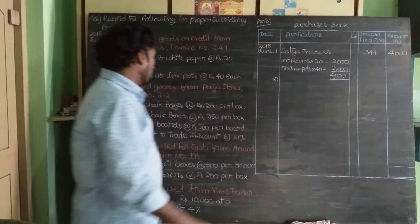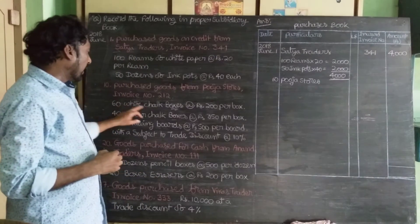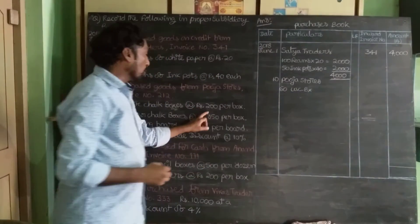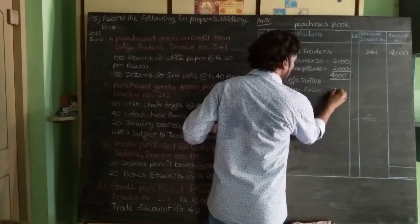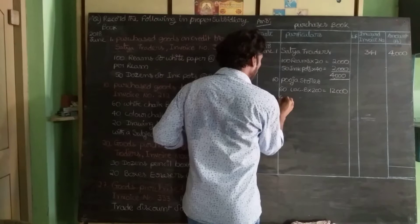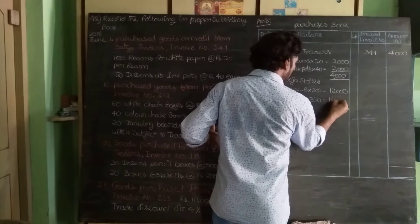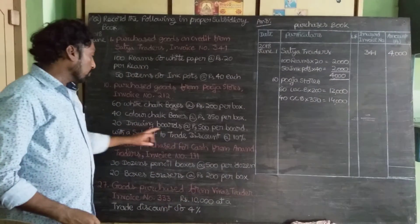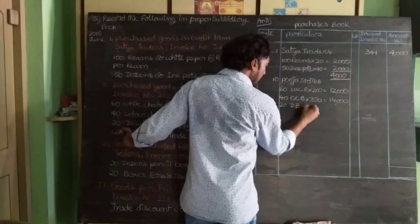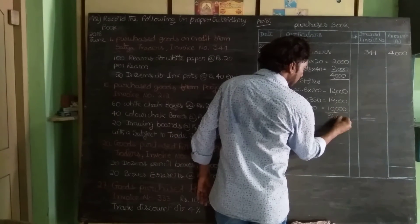June 10th: purchase goods from Pooja Stores. 60 white chalk boxes at ₹200 per box = ₹12,000. 40 colour chalk boxes at ₹350 per box: 40 × ₹350 = ₹14,000. 20 drawing boards at ₹500 per board: 20 × ₹500 = ₹10,000. The total amount of these three items is ₹36,000, which is the gross total.